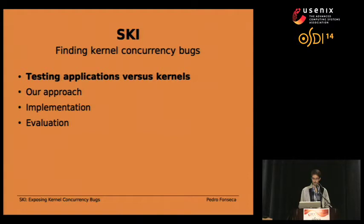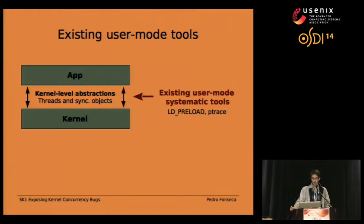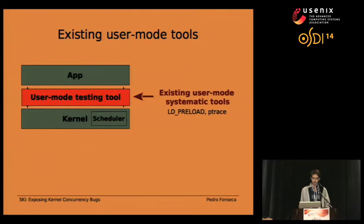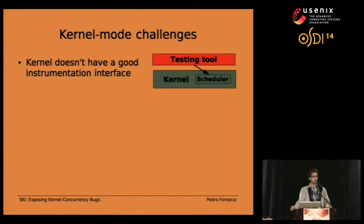Existing tools to test user-mode applications interact at a high level of abstraction, where they are aware of threads and synchronization objects. They interpose themselves between the application and the kernel using mechanisms such as LD preload or ptrace. This way they're able to create additional scheduling constraints and pick one of all the possible schedules the scheduler could potentially choose. This is great for user-mode applications because it does not require changing the application or the kernel. But in the case of the kernel, we do not have such a nice interface to exercise this level of control over the interleavings of kernel threads.